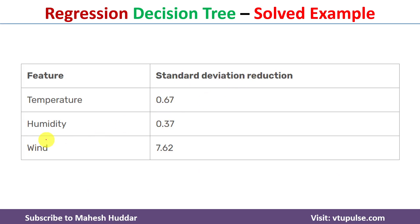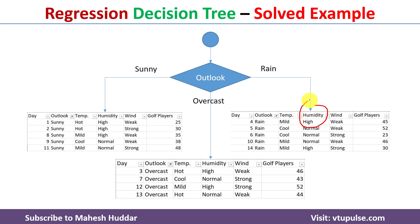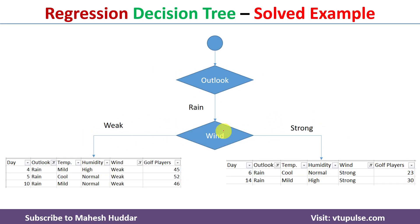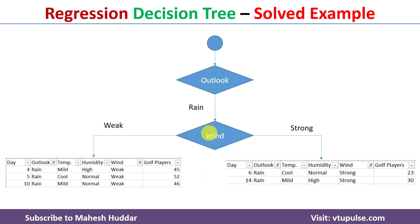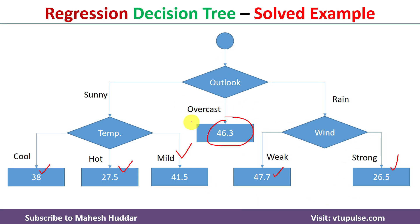Wind has the highest SDR of 7.62, so Wind is selected as the root node for the rain subtree. Wind has two possibilities: weak and strong. When Wind is weak, there are three examples, so we apply pruning and take the average: (45 + 52 + 46) / 3. When Wind is strong, there are two examples, so we take the average: (23 + 30) / 2.